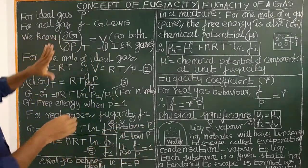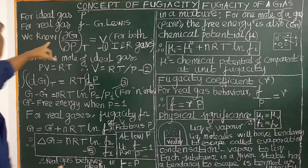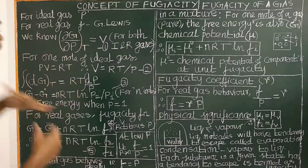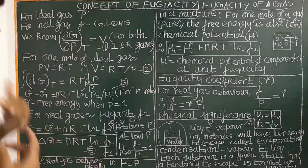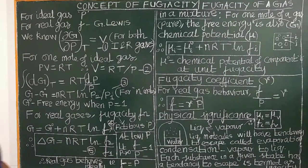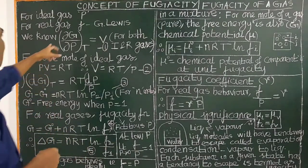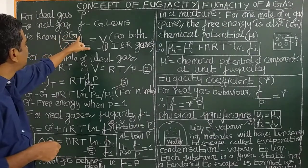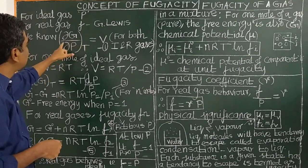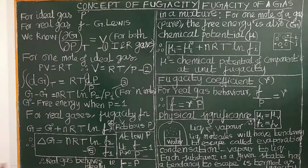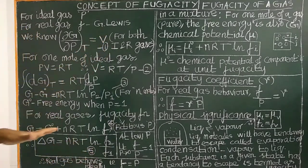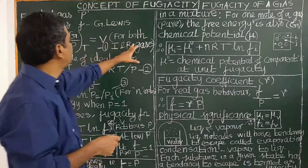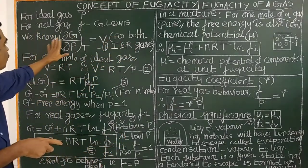We know from thermodynamics the variation of free energy. What is G? G is a free energy state function. What is the importance of free energy change — spontaneous process, non-spontaneous process. The variation of free energy with respect to pressure, at constant temperature, is equal to the volume of the gas. It is applicable for both real and ideal gas.